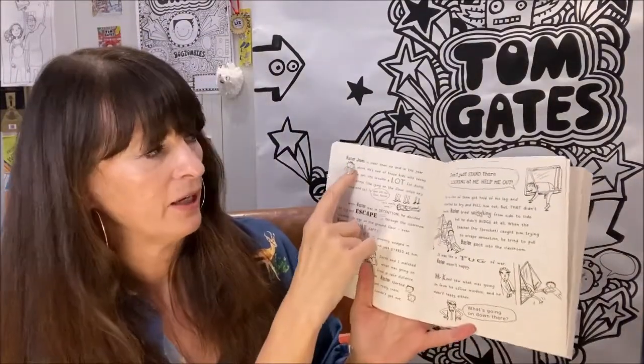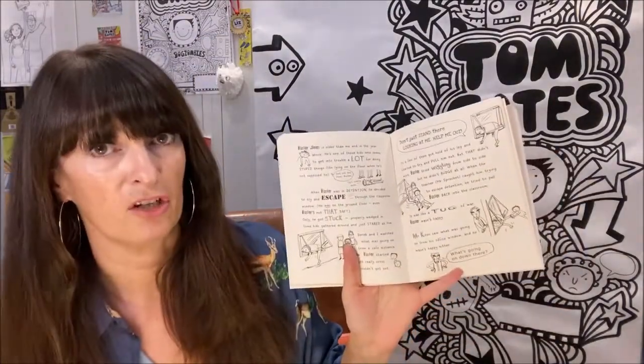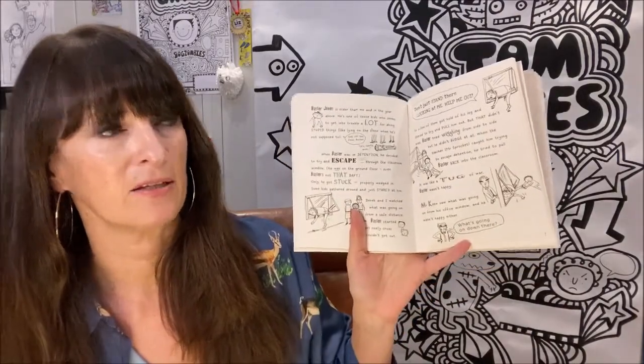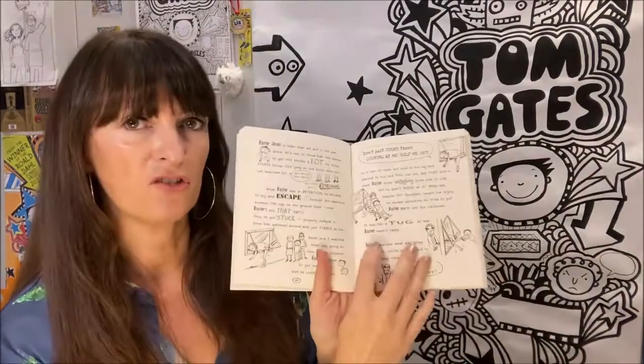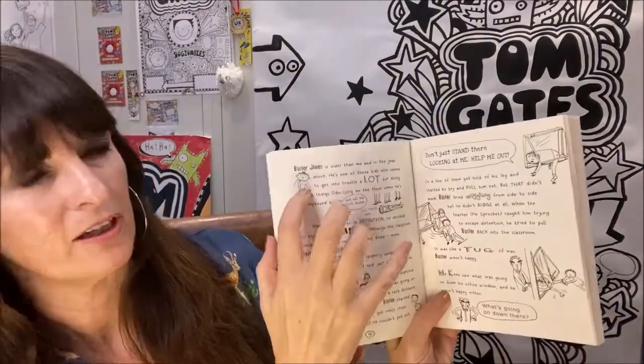I've chosen a bit where it introduces a character called Buster Jones. I think this is the first time he appears. Buster is older than Tom and he gets into trouble quite a lot as well, so most of the time the kids try and avoid him. Here we go — Buster Jones, there he is, looking a bit rough.